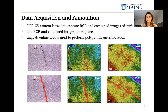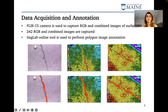Overall, we captured 242 RGB and combined images from different bridge structures around Bangor, Maine. We then used the ImageLab online tool to annotate these images, because we need these annotated images to feed into our machine learning algorithm. These figures here show the RGB image, the annotated RGB image, and two samples of combined RGB and infrared images and their annotated images.